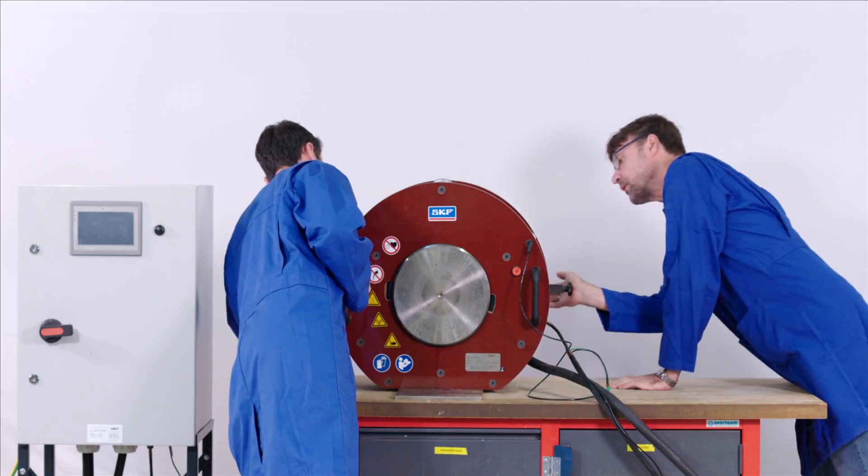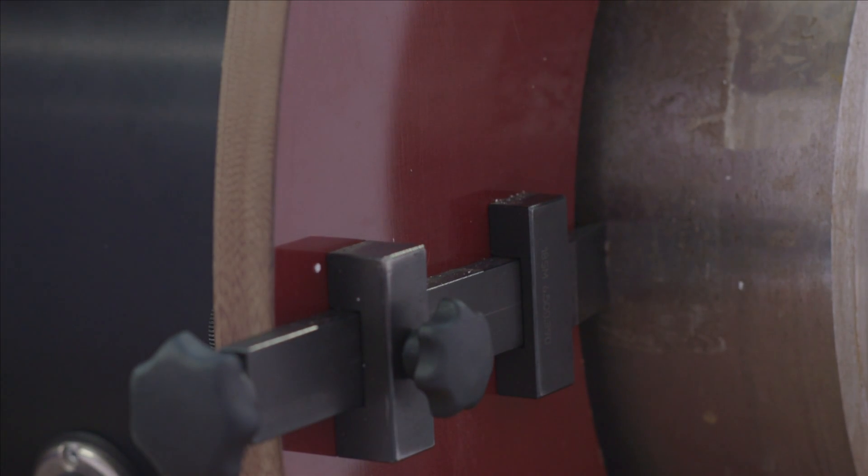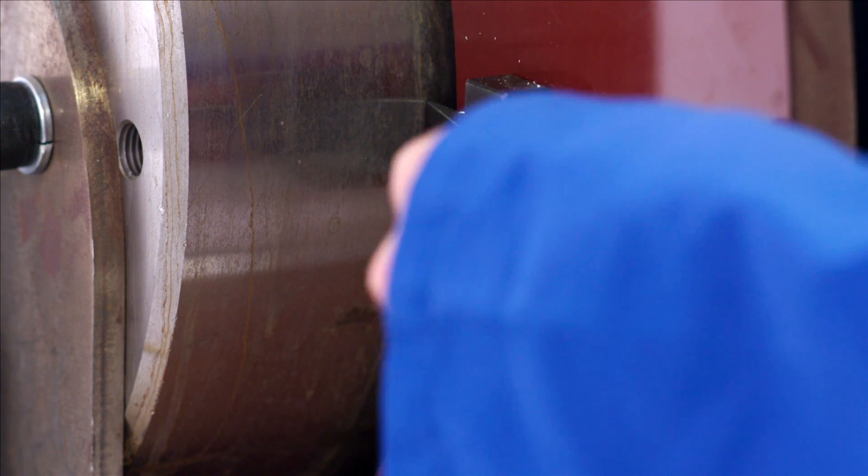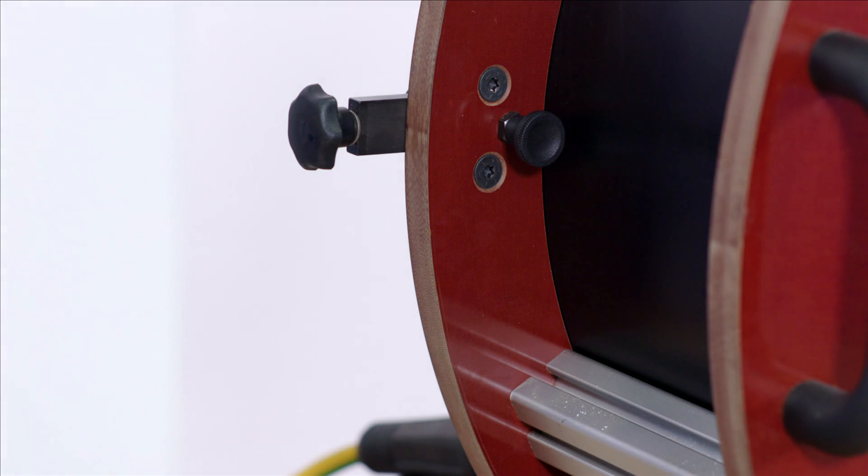Position the withdrawal plates in the recess behind the inner ring. Then tighten the locking screws. If no recess is present, then use a crowbar to displace the inner ring after heating. Then apply the withdrawal plates.